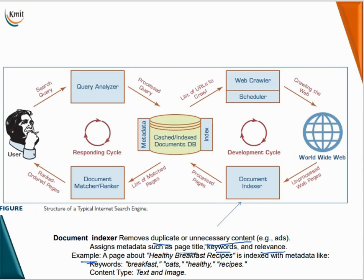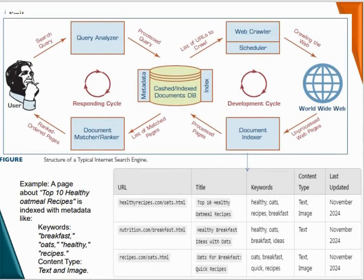For example, a page about healthy breakfast recipes is indexed with metadata including keywords such as 'breakfast', 'oats', and 'healthy recipes', as well as content type like text and image. The document indexer stores fields including URL, title, keywords, content type, and last updated.